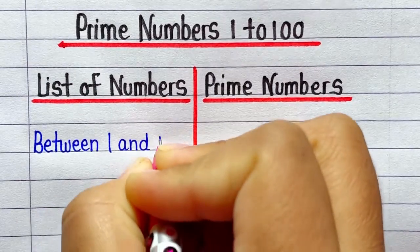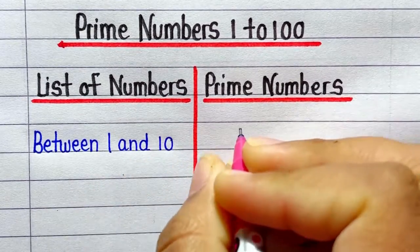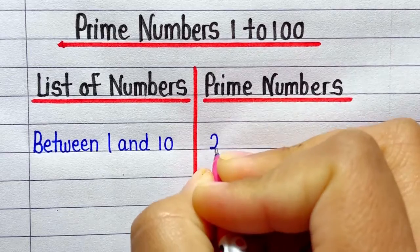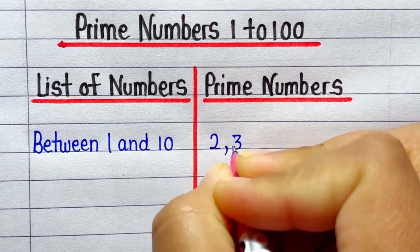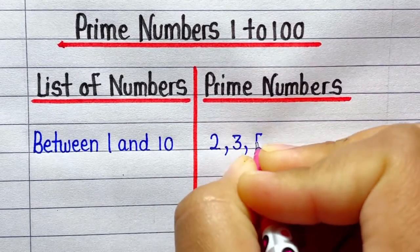Prime numbers between 1 and 10 are 2, 3, 5, 7.